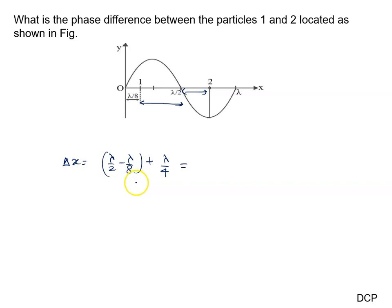Solving this, it is given by 5 lambda by 8. Now we take delta phi.